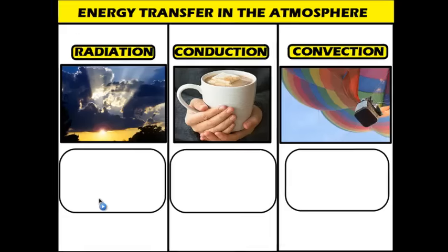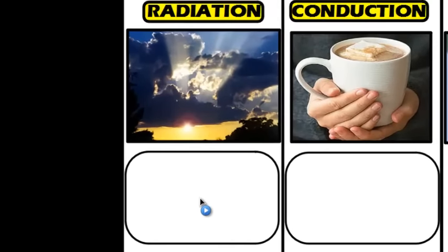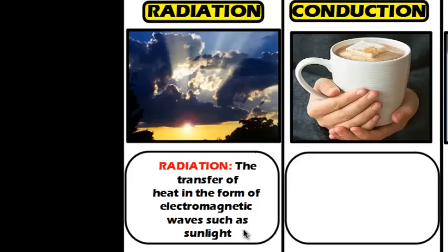Let's start off with radiation first. This is probably the easier one to remember. Radiation is the transfer of heat in the form of electromagnetic waves, such as sunlight. If you've ever been chilly and walked into a sunny open area and felt the sun's rays on you, you've noticed that you've heated up. The light from the sun is transferring heat onto your skin, warming you up and making you feel more comfortable. That's one example of heat transfer through radiation.